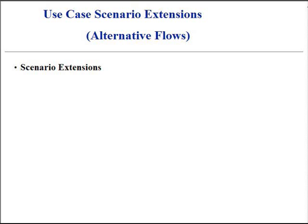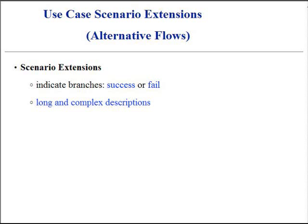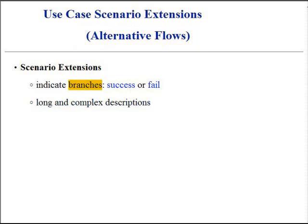Use Case Scenario Extensions are very important. They indicate other scenarios or branches, both success or fail. Note that in the fully-dressed example, the extension section was considerably longer and more complex than the main success scenario section. This is common and to be expected. Extensions are also known as alternative flows of the use case. Extension scenarios are branches from the main success branch of the use case.